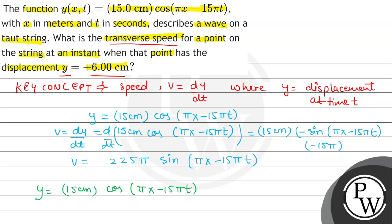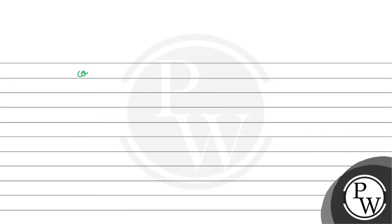So if we put 6, this is 15 cos(πx - 15πt). If we solve it, what will we get? cos(πx - 15πt) equals 6 divided by 15.